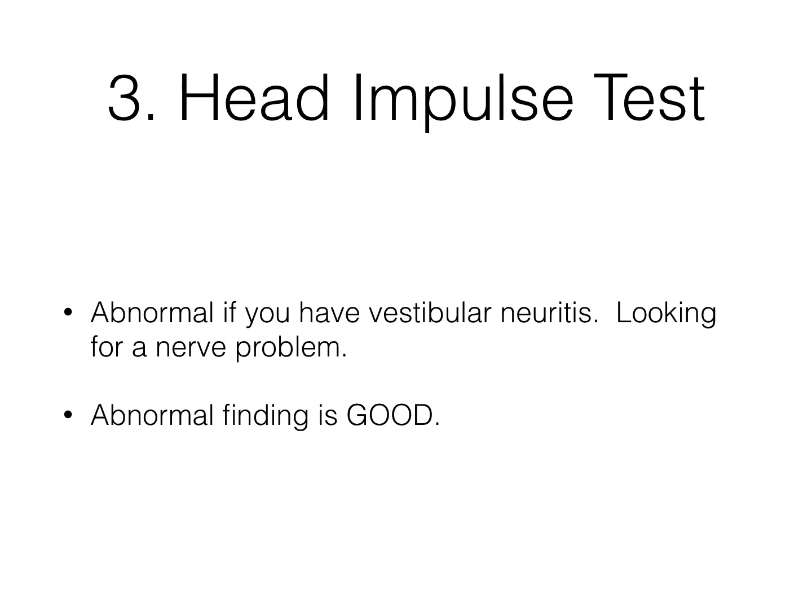The head impulse test will be abnormal if you have vestibular neuritis. The head impulse test is looking to see if you have a nerve problem, and if you have a nerve problem, you probably don't have a brain problem. So it's a little counterintuitive in that an abnormal finding is a good finding.